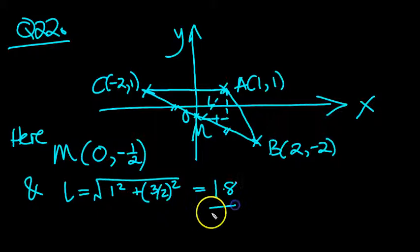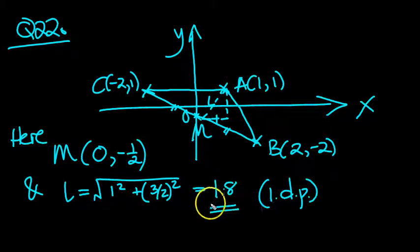Okay, equals that, and then 1.80 to 2 decimal places. Well, 1.8 to 1 decimal place is probably better, isn't it, in this case. Okay then, that's 22 done. The length of that line is 1.8 to 1 decimal place. That's good.